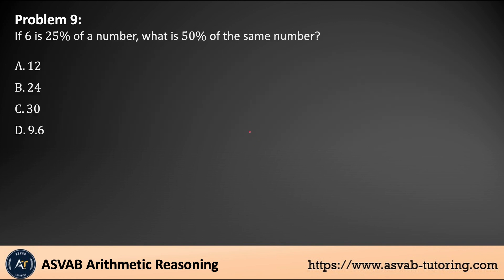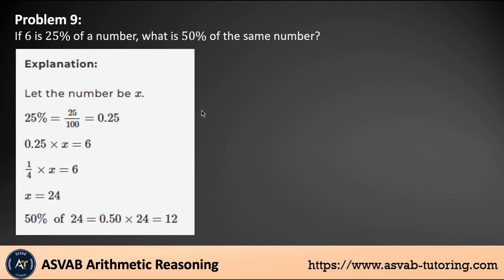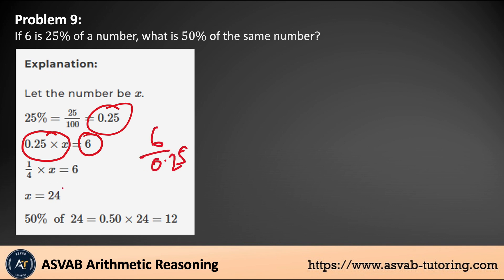Next problem: if 6 is 25% of a number, what is 50% of the same number? First, find the original number. Convert 25% to a decimal: 0.25. Set up 0.25 times X equals 6, so divide 6 by 0.25, giving you 24. Now find 50% of 24: convert 50% to 0.50 and multiply by 24, giving you 12. So 12 is the final answer.